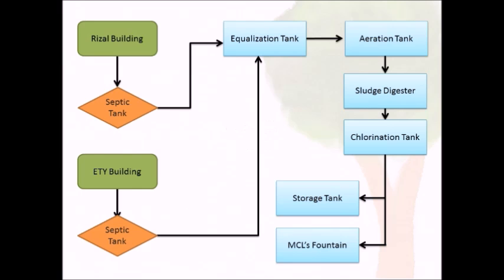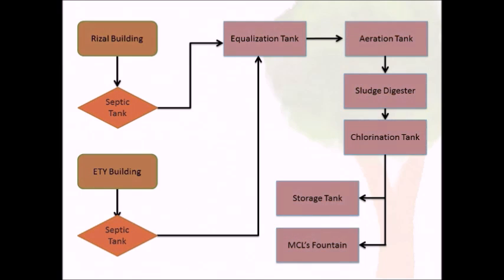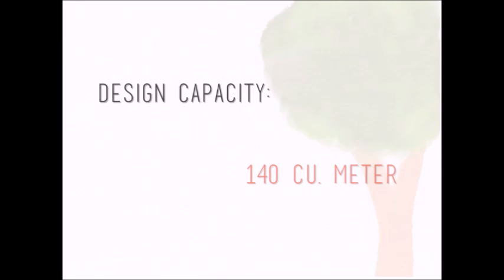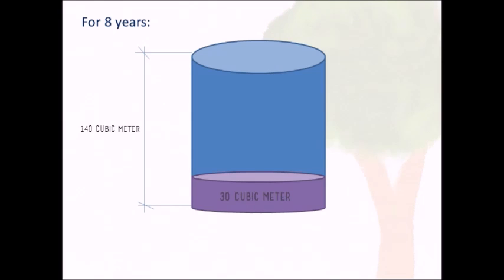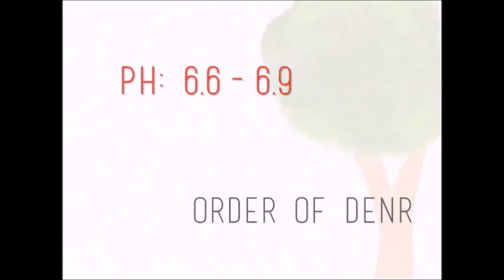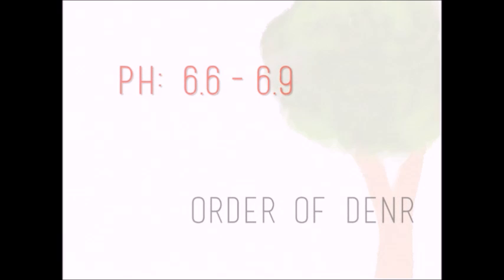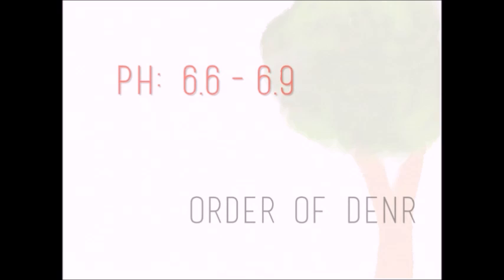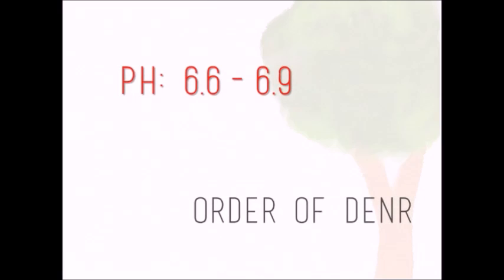Let's take a look first on the treatment processes in the MCL wastewater. The design capacity of the MCL's wastewater treatment facility is to hold 140 cubic meters of settled waste, what we called sludge. As of now, only 30 cubic meters of sludge is in the digestion tank for the 8 years since it started to operate. The pH remained to be in between 6.5 to 6.9, as per order set by the Department of Natural Resources.